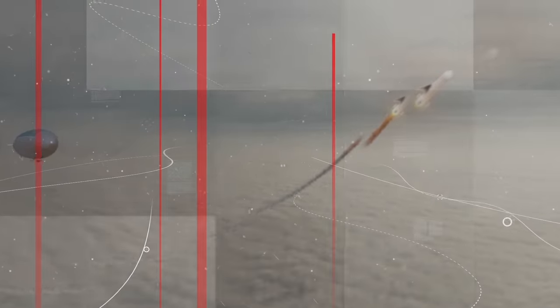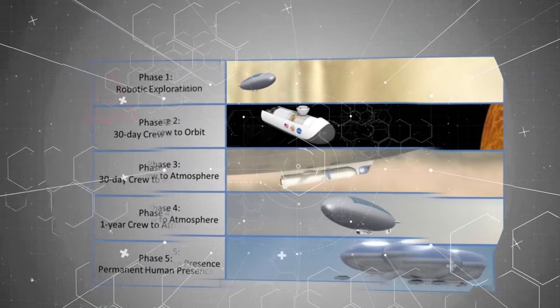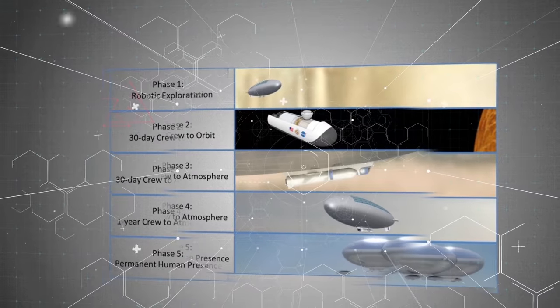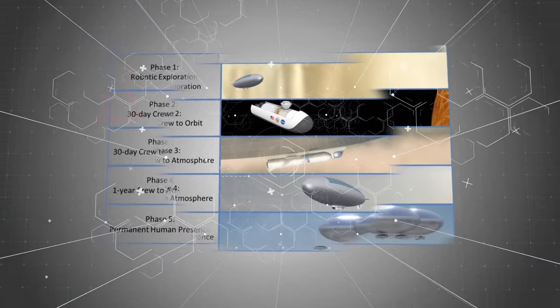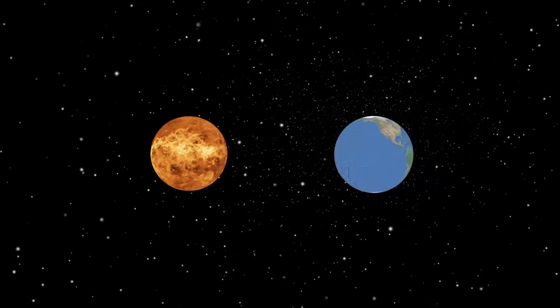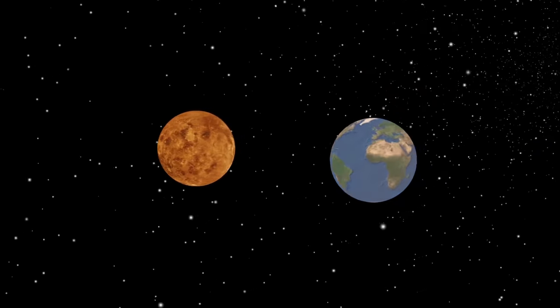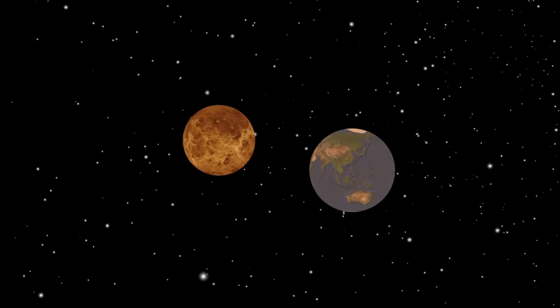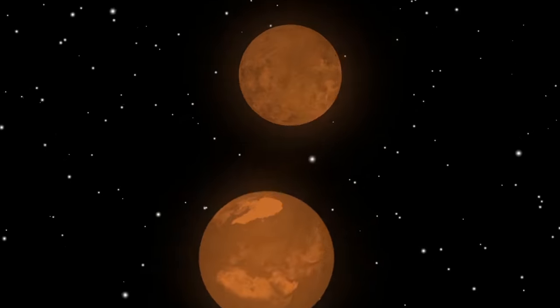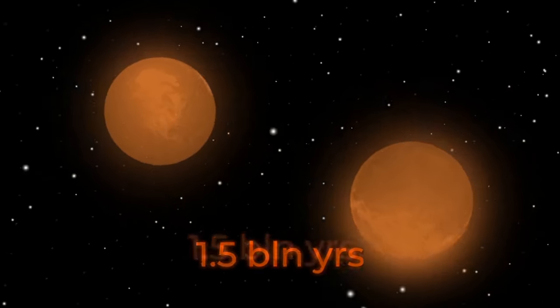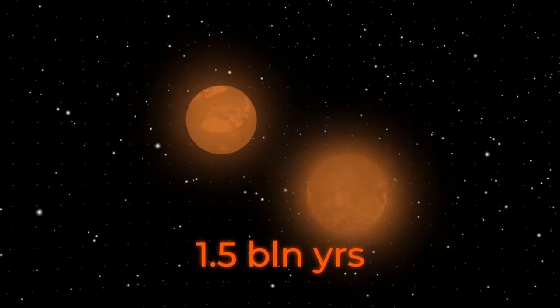But for now, the project is on hold. Perhaps the idea of hovering over Venus in a spacecraft is worth taking a closer look, because the Earth is heading in the same direction as Venus. The greenhouse effect on Venus is often cited as a nightmare example of what awaits the Earth in future. According to futurologists, we have about 1.5 billion years to find a new home.